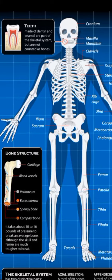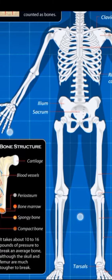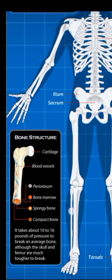Here is the structure of bone. The bone structure contains cartilage, blood vessels, periosteum, bone marrow, spongy bone, and compact bone.